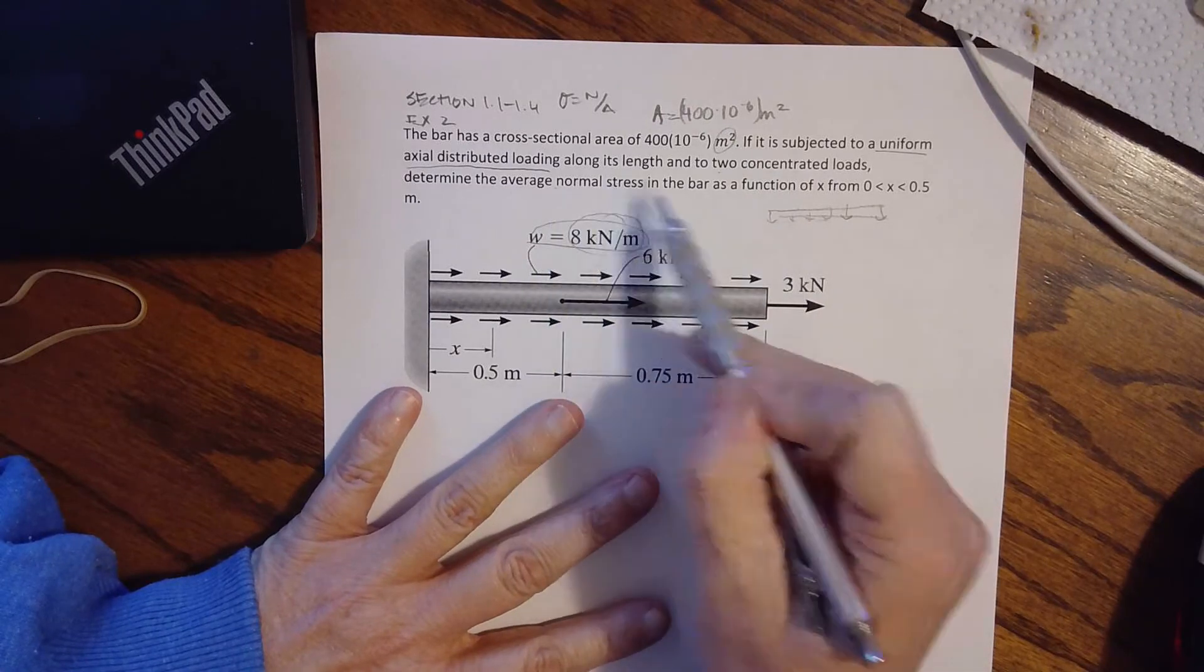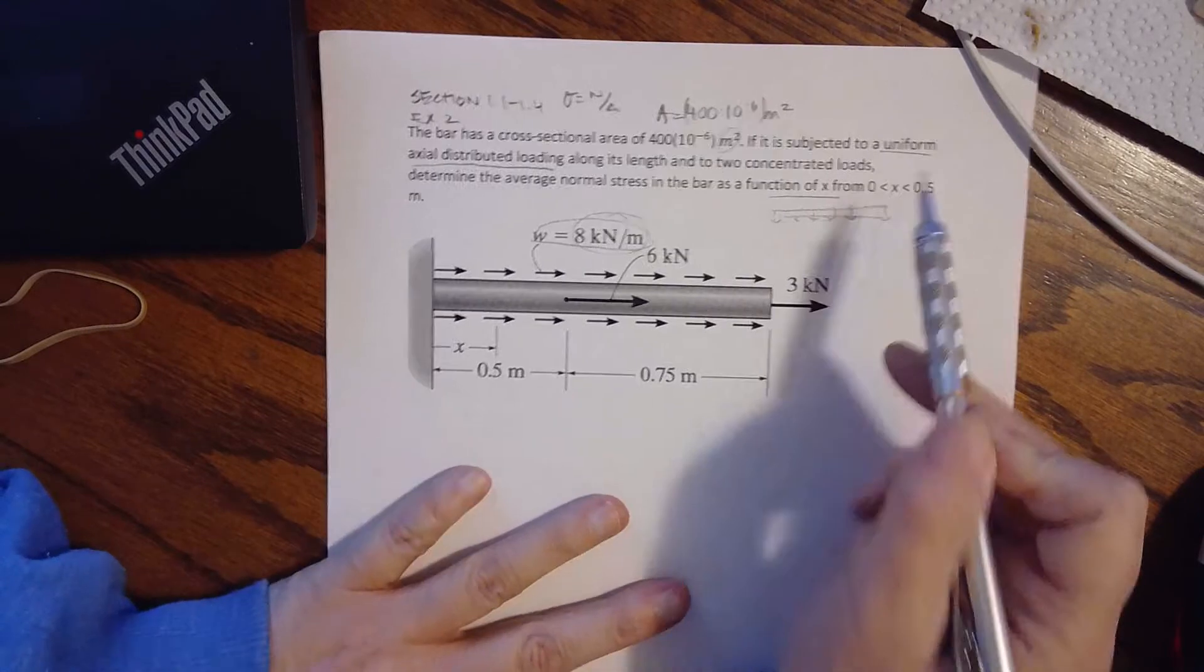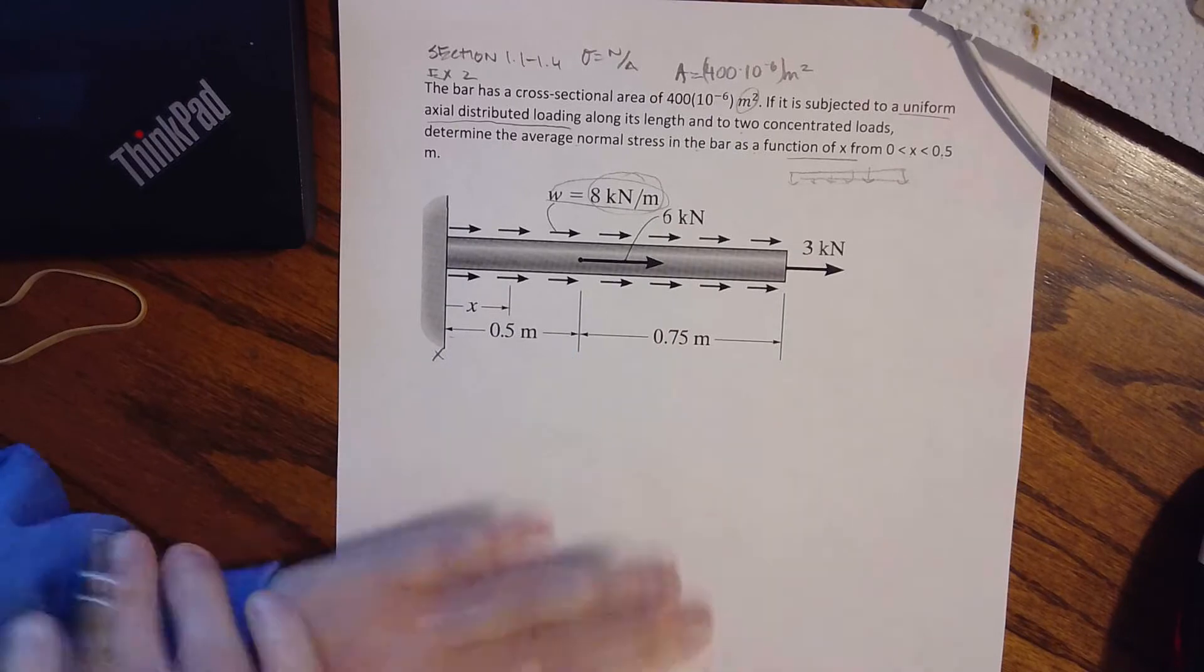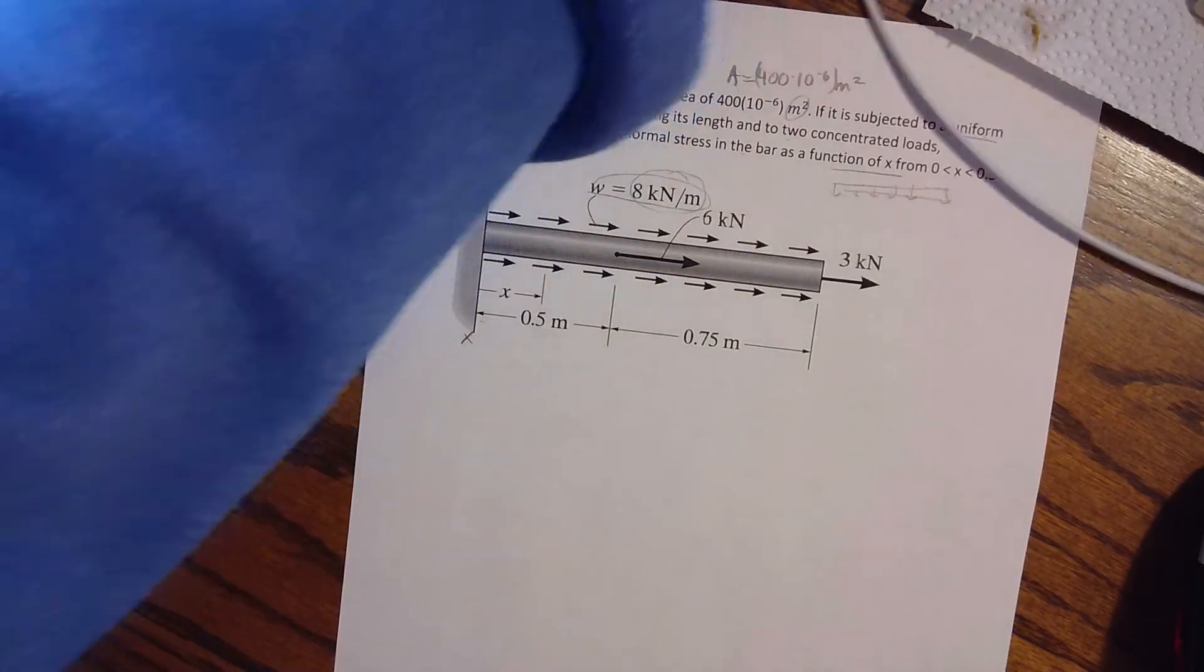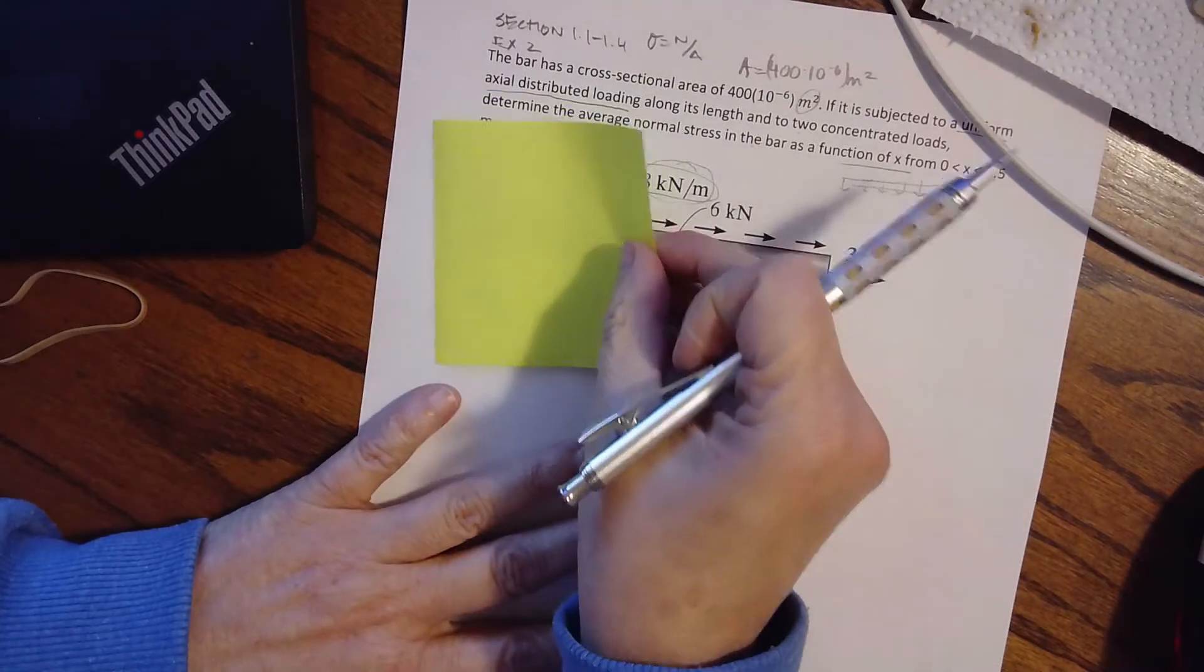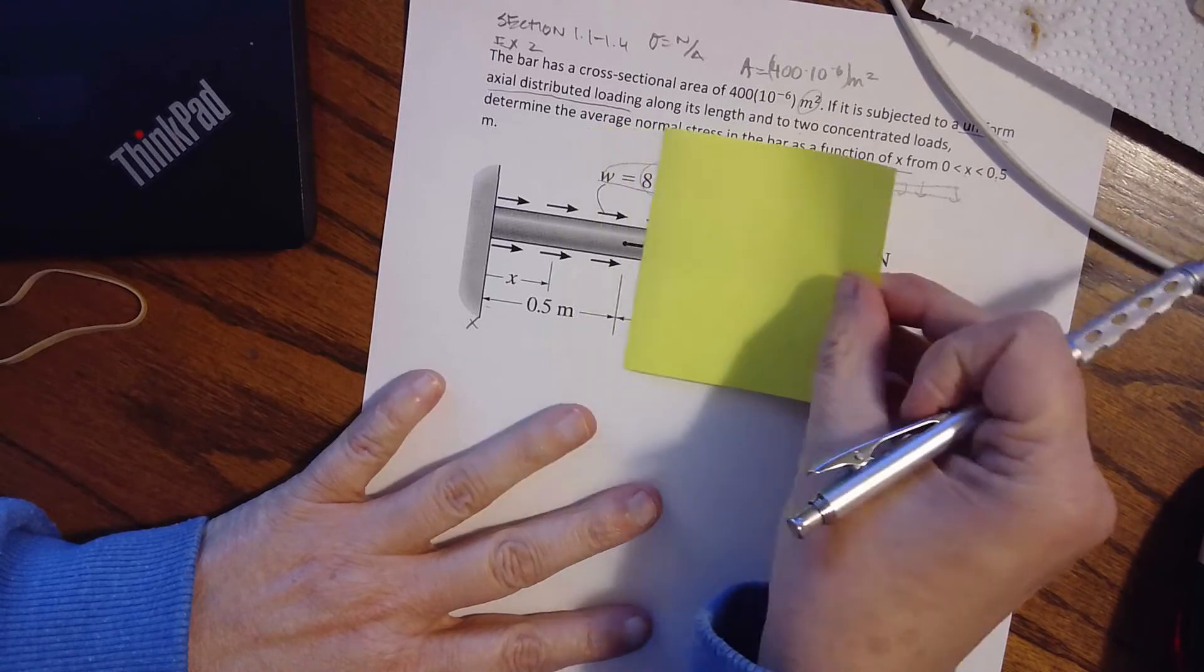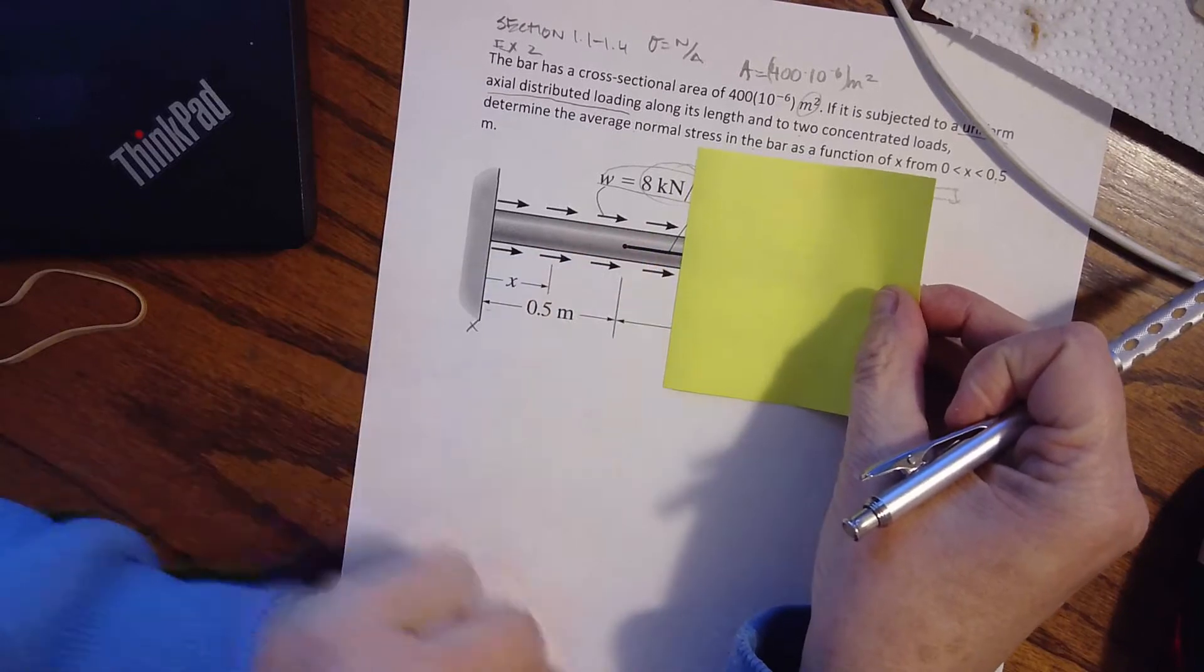Determine the average normal stress in the bar as a function of x from 0 to 0.5. Remember x always starts back here on the left side of the beam, always, always. So if I take my handy dandy post-it note, and I want to write an equation from 0 to 0.5. Why do I want from 0 to 0.5? Well, because at 0.5, I now have an axial load that changes my free body diagram.